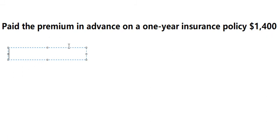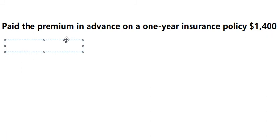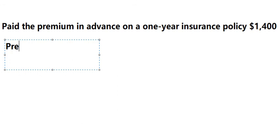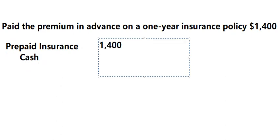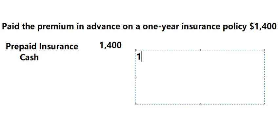Now I will show you how to answer. We will use prepaid insurance as the debit entry, and cash as the credit entry. I will put 1400 here for the debit, and 1400 here for the credit.